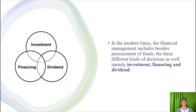In modern times, financial management includes more than just procurement. Procurement is not the only main aspect; there are other decisions along with procurement of funds. You get the funds and also decide about where to invest, how to invest, in which project to invest, how to finance the requirements of the organization, and how to take the dividend decision — that is, when profits are earned, whether to distribute the entire profit among shareholders, retain a part of the profits, or issue bonus shares.